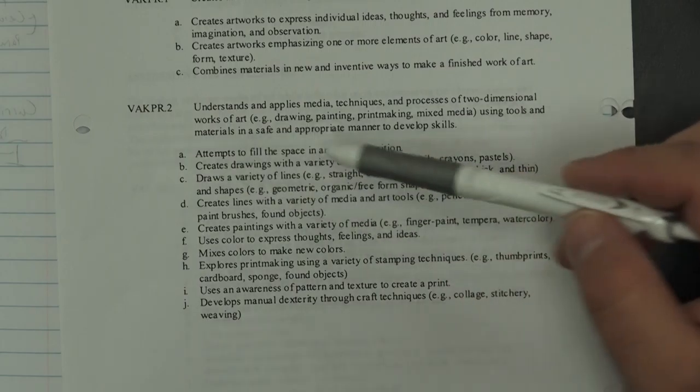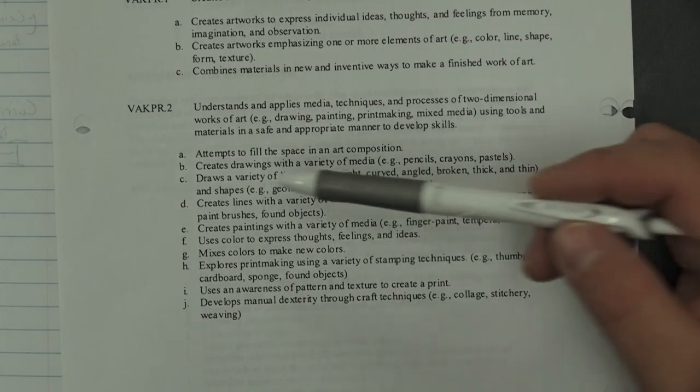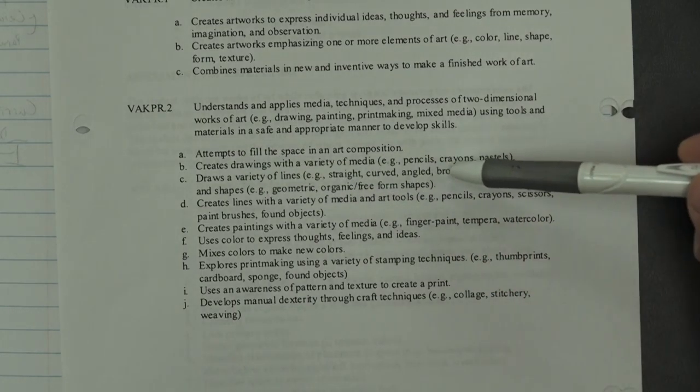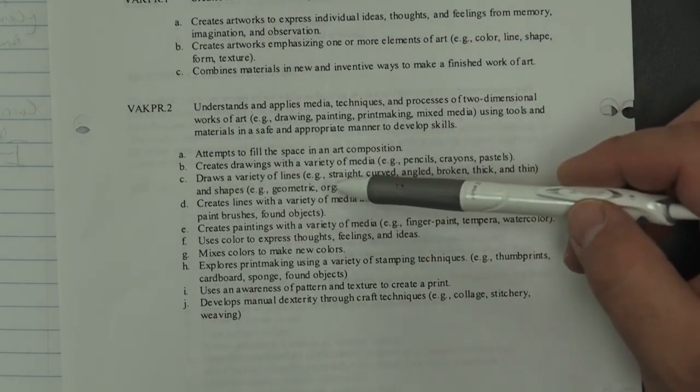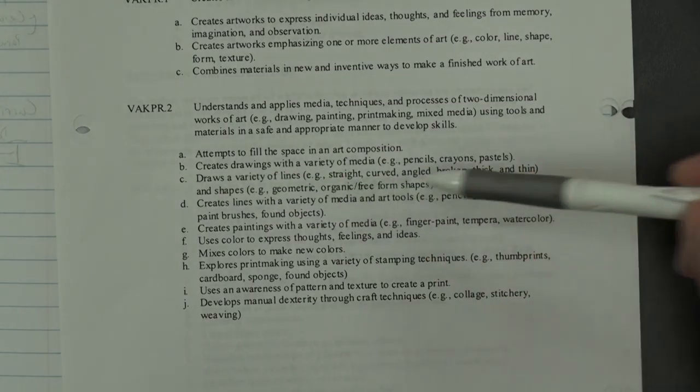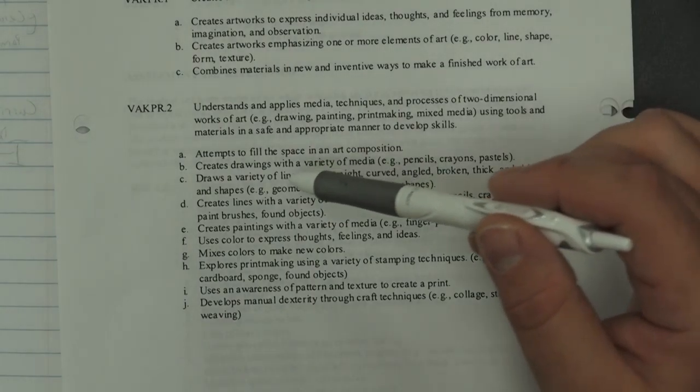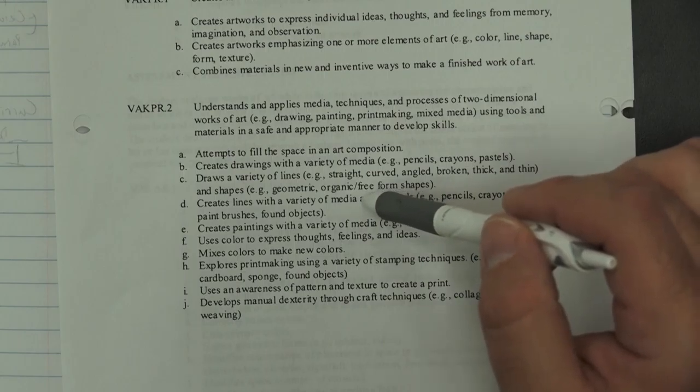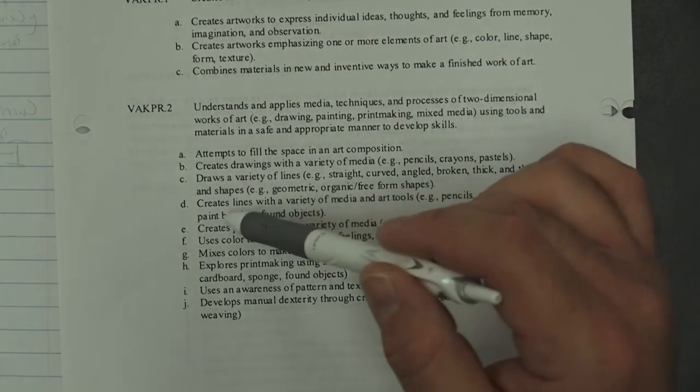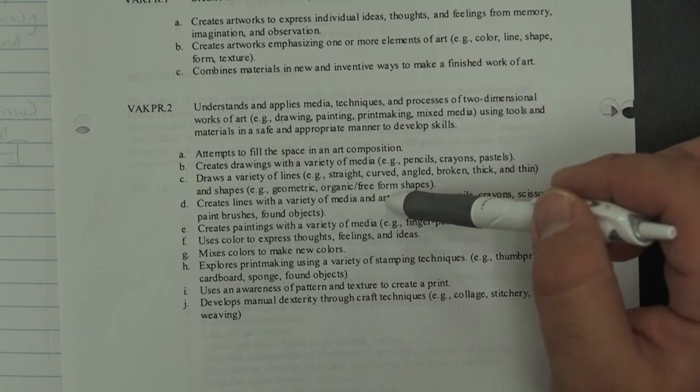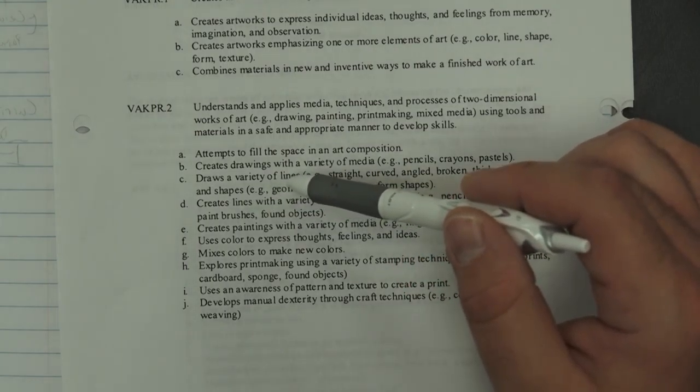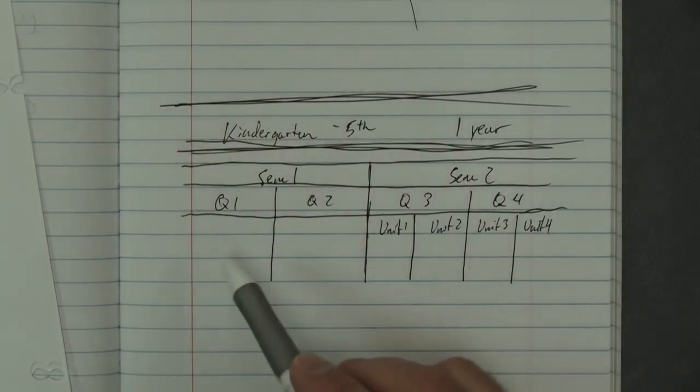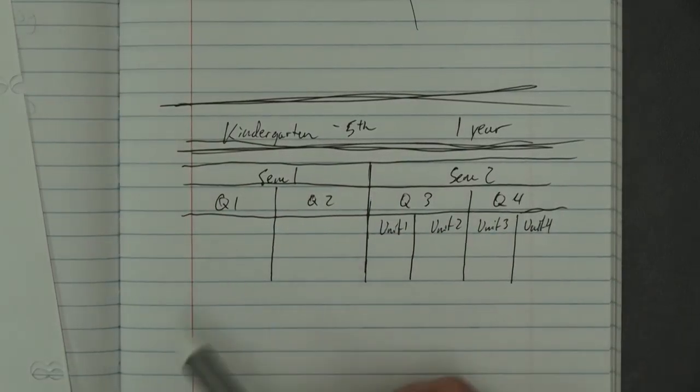Draws a variety of lines - straight, curved, angled, broken, thick, thin - and shapes: geometric, organic, freeform shapes. Drawing with line and creates lines with variety of media and art tools - pencils, crayons, scissors, paintbrushes, found objects. Creation of those lines and drawing a variety of those lines are going to fall into usually the beginning of what you're trying to cover.